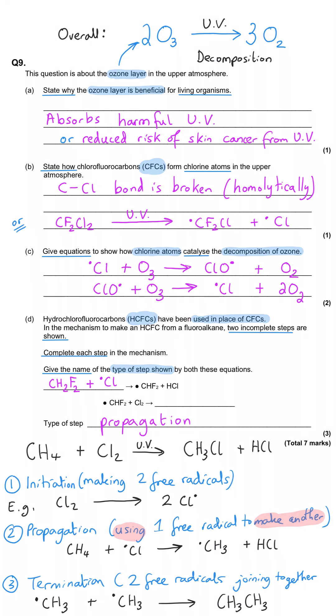And then the second step has got the hydrofluorocarbon free radical reacting with more chlorine and we're going to make our halogenoalkane product, which is going to be one of those chlorines joined onto the free radical, which I've got here. And the other chlorine atom from the molecule is going to make a chlorine free radical.